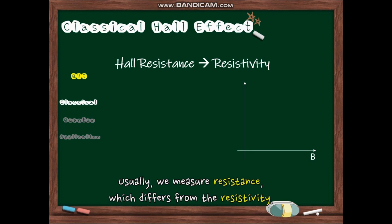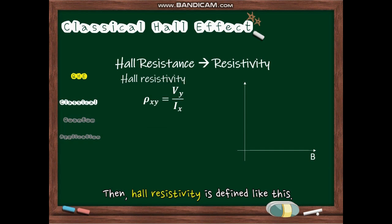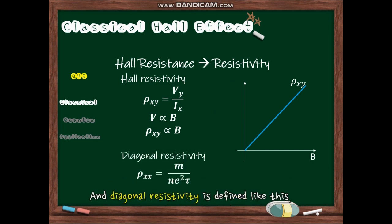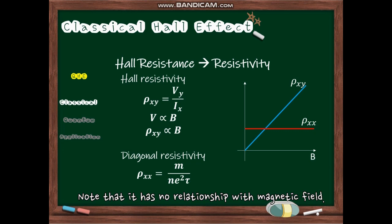Usually, we measure resistance, which differs from the resistivity. Then, Hall resistivity is defined like this. From this, we can see that Hall resistivity has linear relationship with magnetic field. And diagonal resistivity is defined like this. Note that it has no relationship with magnetic field.